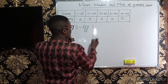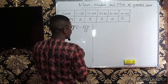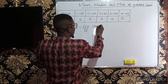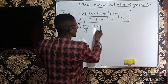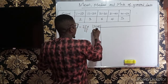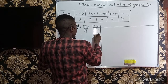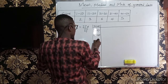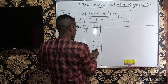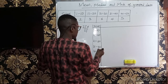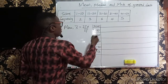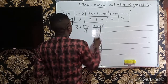Let's set up a table with the score or class interval column. The scores are: 1 to 10, 11 to 20, 21 to 30, 31 to 40, and 41 to 50. After the scores we have the frequency, which I'll denote with f.